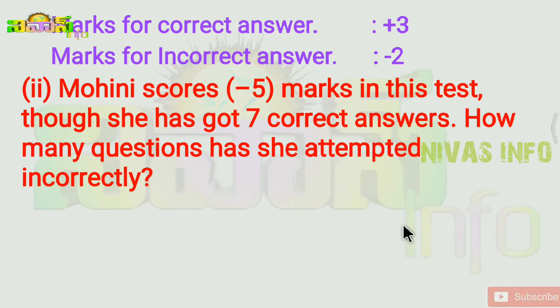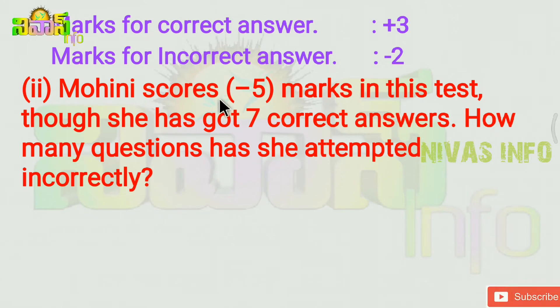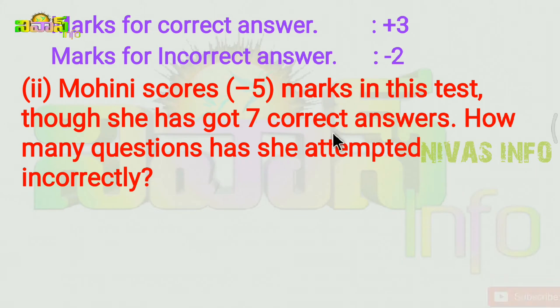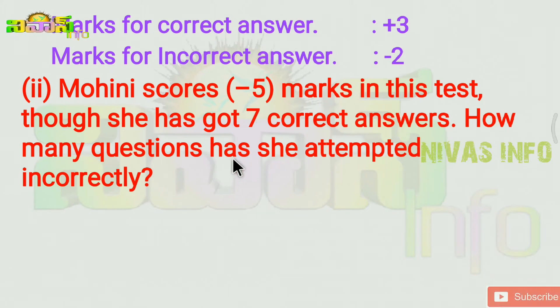The second problem: Mohini scores minus 5 marks in the test. Though she has got 7 correct answers, how many questions has she attempted incorrectly?